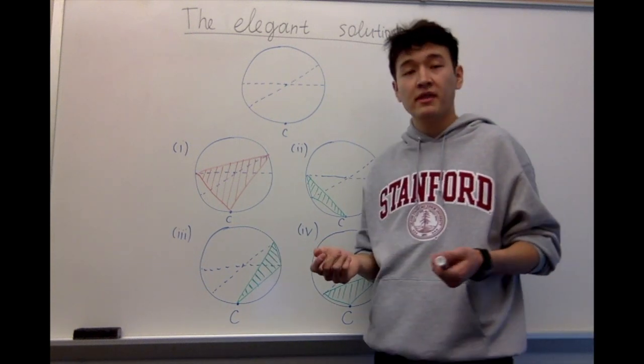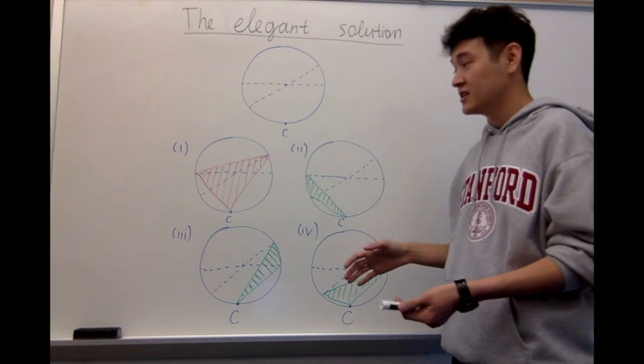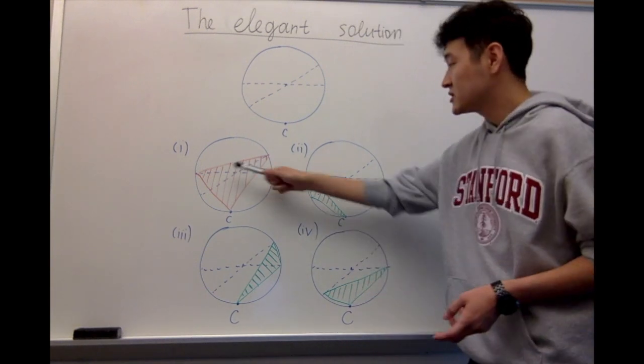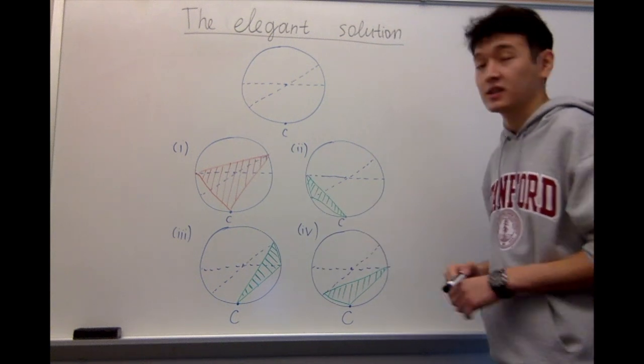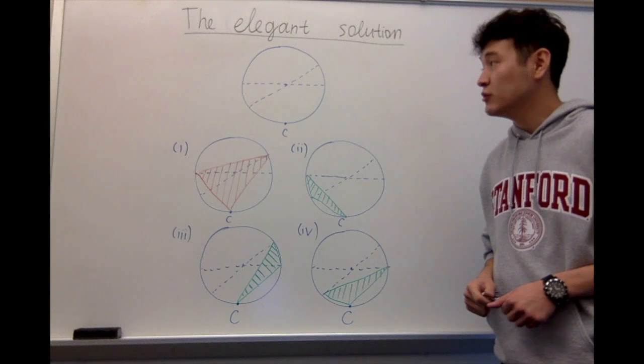Now you might be thinking, oh, the answer is 1/4, but that's not it. There is one more thing to prove: Why are these triangles identified uniquely? What if we double count cases? But actually, we do not.